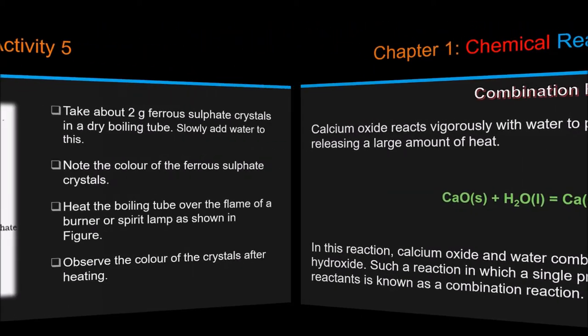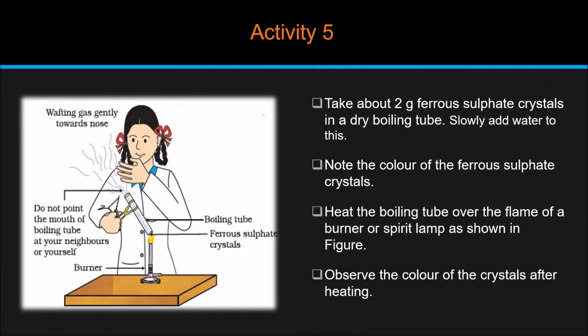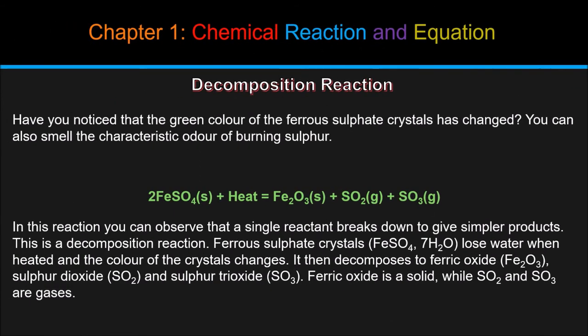Now moving on to next activity, that is activity number 5. In this activity, take about 2 gram of ferrous sulfate crystals in a dry boiling tube. Note the color of the ferrous sulfate crystals. Heat the boiling tube over the flame of a burner or spirit lamp as shown in figure. Observe the color of the crystals after heating. The video you have seen was a part of decomposition reaction. Have you noticed that the green color of the ferrous sulfate crystals has changed?